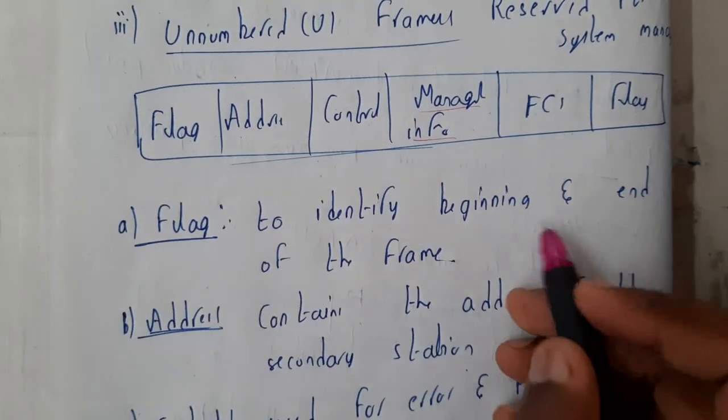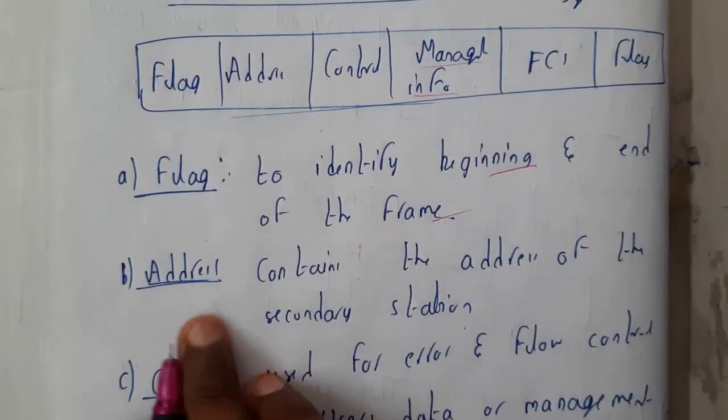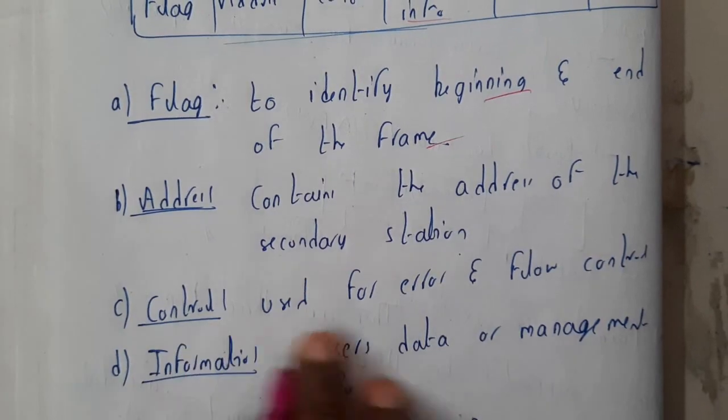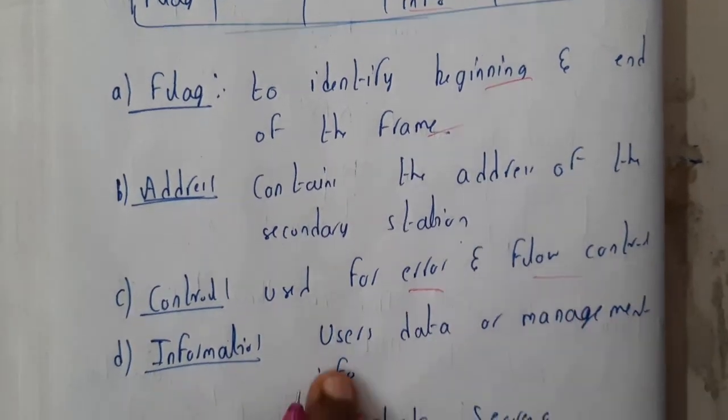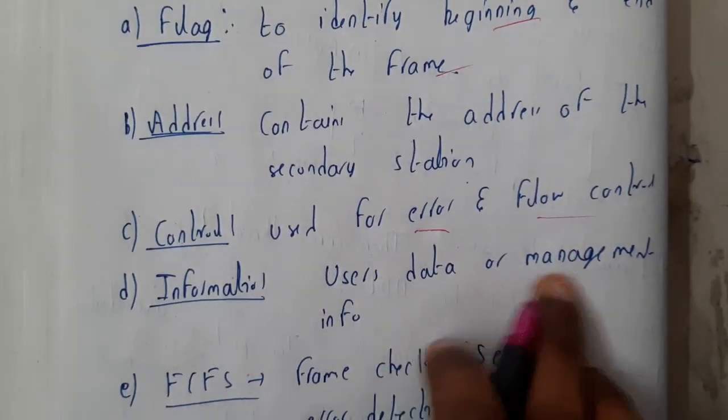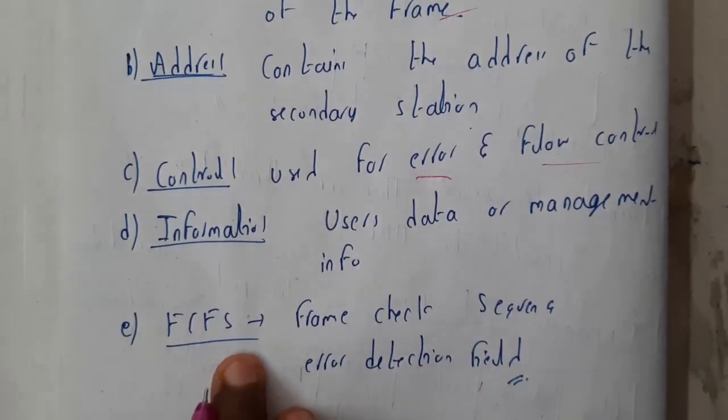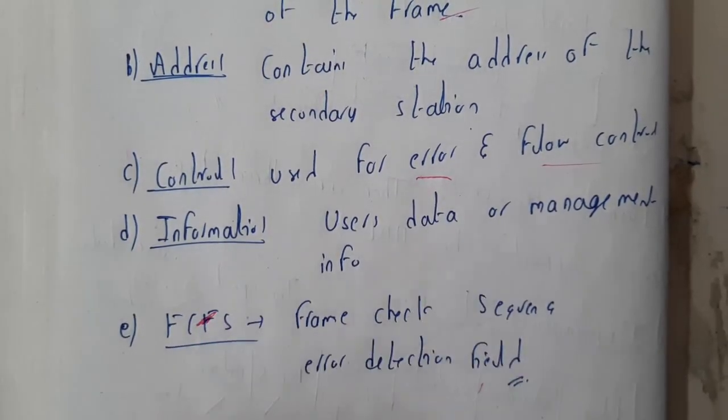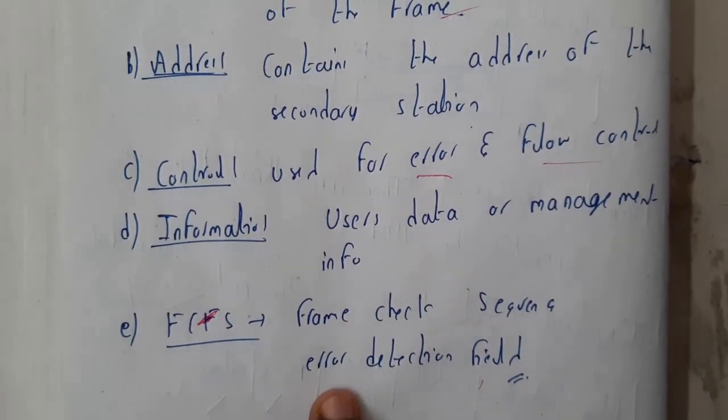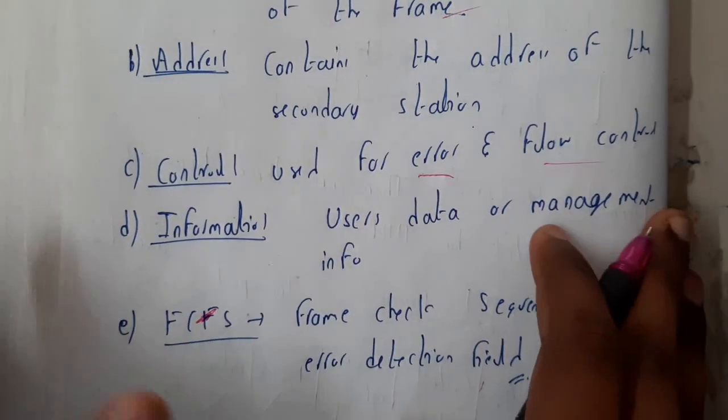The flag indicates the beginning and ending of the frame. Address contains the secondary address. Control handles error and flow control. Information stores the data or management information. FCS, frame check sequence, is the error detection field. I hope everyone got at least a bit of idea.